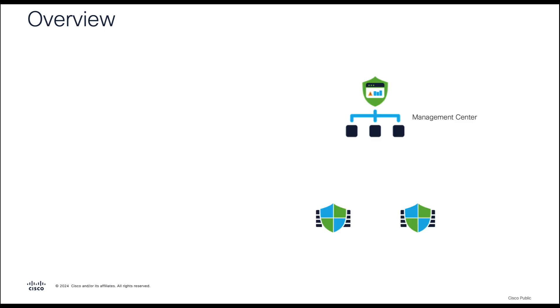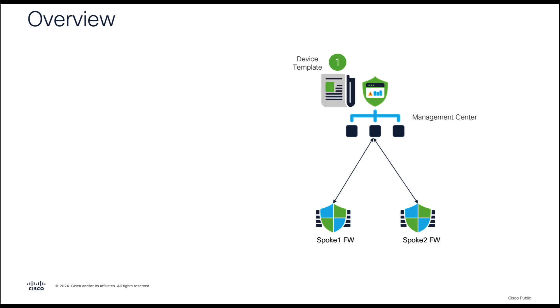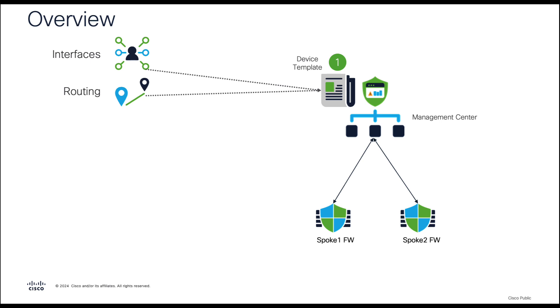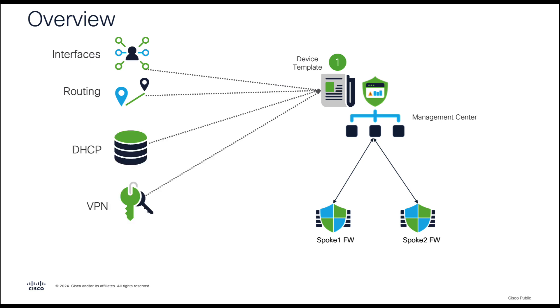Let's consider a deployment where we have a firewall management center that manages a couple of branch devices. This feature allows an admin to pre-provision day 0 configuration using templates, which supports interface configuration for device initialization, routing and DHCP for LAN and WAN connectivity, VPN for access to the hub and other branch sites, and additional security policies.